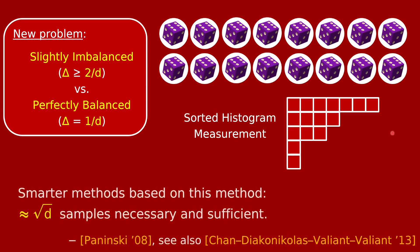This was worked out originally by Paninski, and in more full detail by Valiant and Valiant. It was shown that if you want to tell the difference between perfectly balanced and slightly imbalanced, proportional to square-root-d samples or rolls of the die are necessary and sufficient. This is a non-obvious result, and it also beats the proportional-to-d we saw with the pair method.